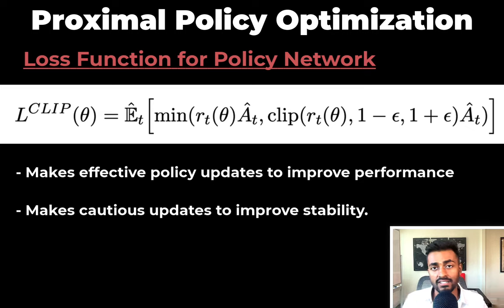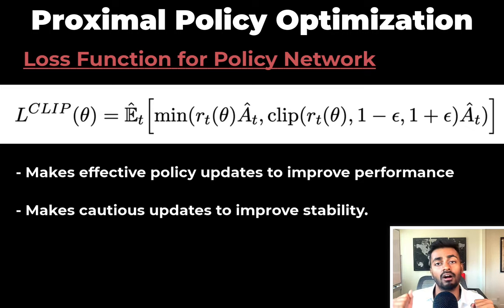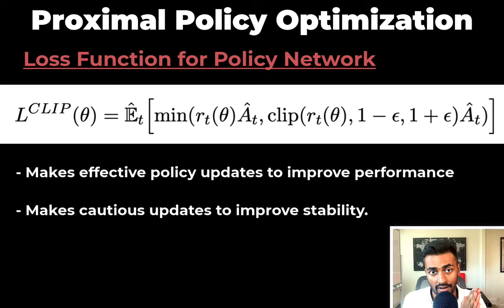Effectively, the loss function strikes a balance between making effective policy updates to improve performance and making cautious policy updates to improve stability. The value function network and the policy network are trained together, and that is PPO.